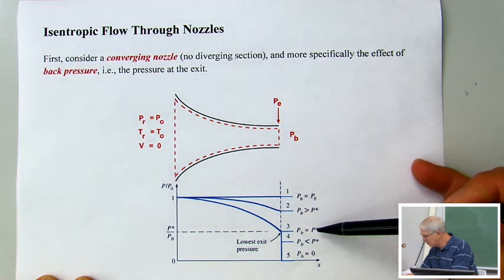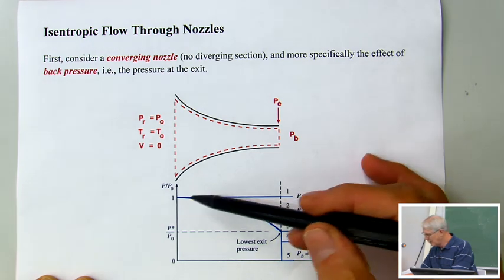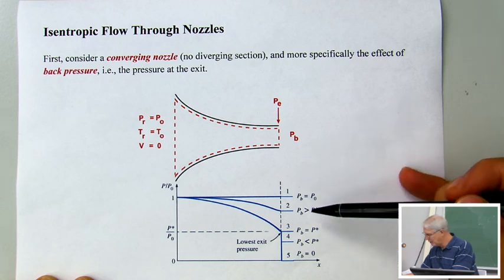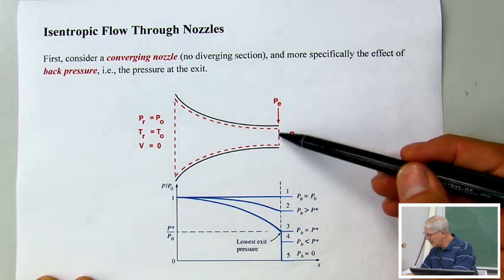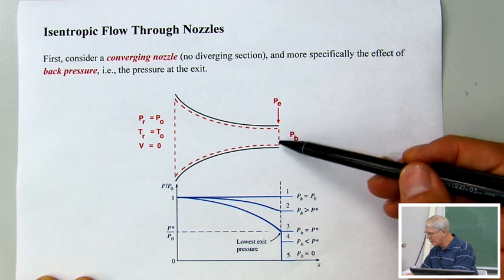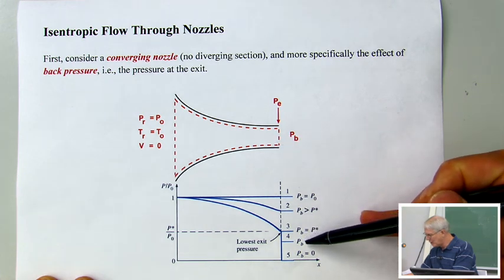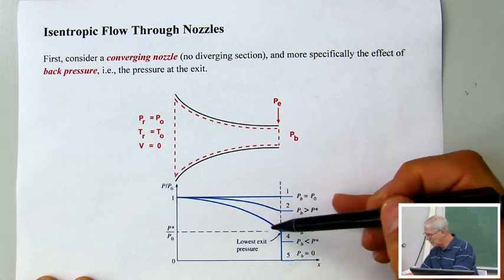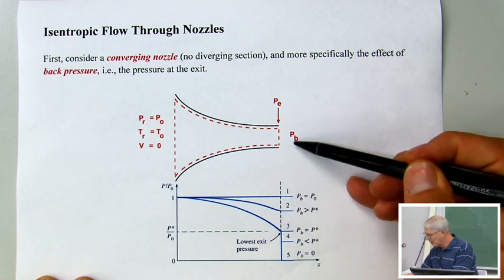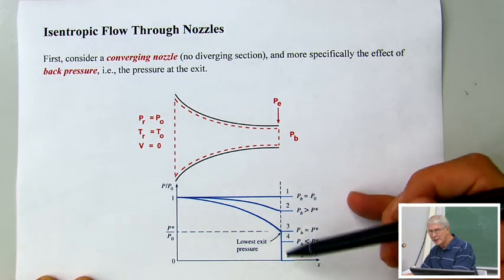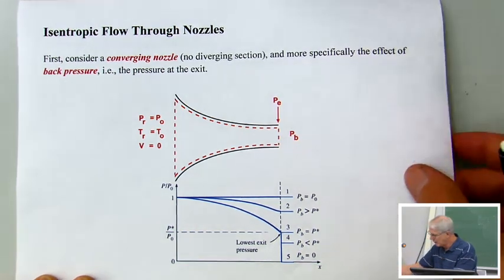We continue to lower that back pressure until it equals P star, and that's when we have our greatest pressure decrease in the nozzle. If we lower the back pressure any further, because the exit pressure is P star, there's no way to transmit that information upstream — we have sonic conditions at the exit. So the back pressure can drop below P star, but we're not going to change anything inside the nozzle. The lowest pressure we could have at the exit is P star, and we can take the back pressure all the way down to zero without changing the pressure inside the nozzle.